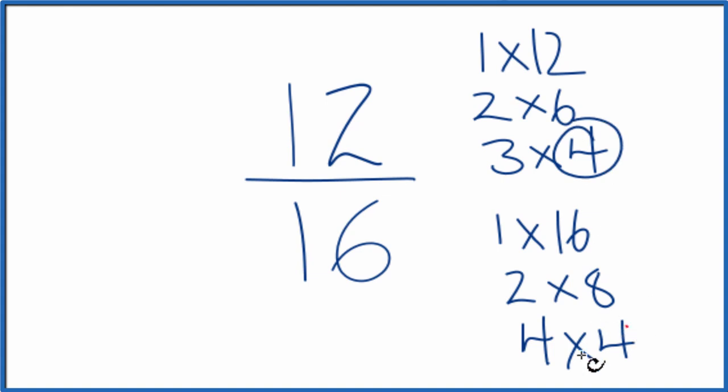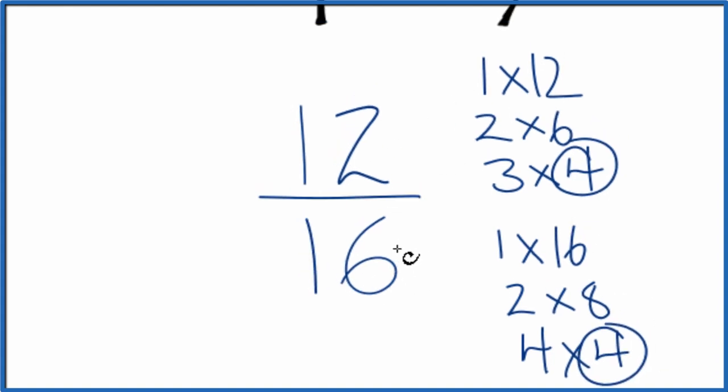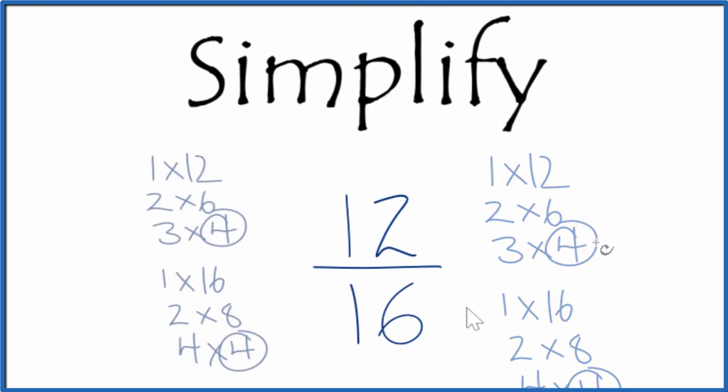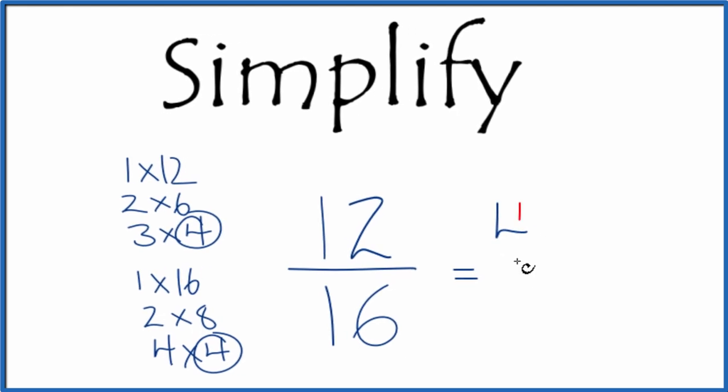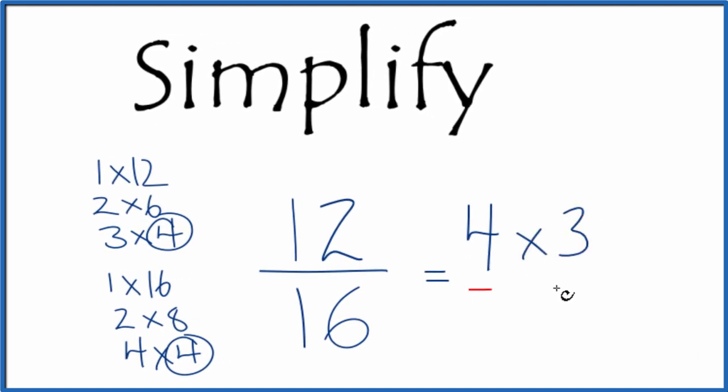So if we divide 12 by 4 and 16 by 4, we'll have reduced this fraction. Let's move these over here. You can think about it like this: if we have 4 times 3, that equals 12, and 4 times 4, that equals 16. Now, since we have the 4 on the top and the bottom, we'll cross that out.